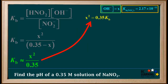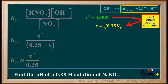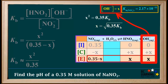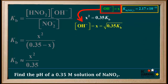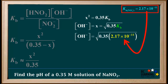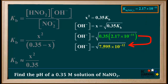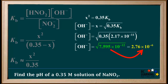Using this assumption, we get that Kb is approximately equal to x squared divided by 0.35. Rearranging gives us x squared equals 0.35 times Kb. Taking the square root of both sides gives us x equals the square root of 0.35 times Kb. Since x equals the hydroxide ion concentration, we substitute 2.17 times 10 to the negative 11th for Kb. 0.35 times 2.17 times 10 to the negative 11th equals 7.595 times 10 to the negative 12th. Taking the square root gives us 2.76 times 10 to the negative 6th molar.